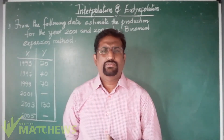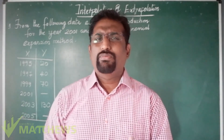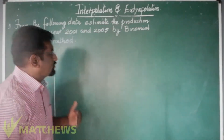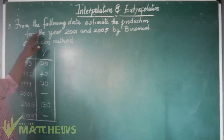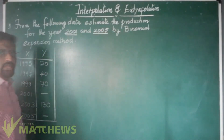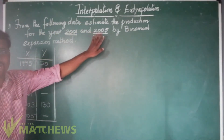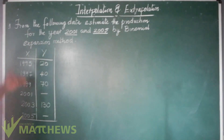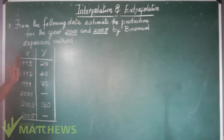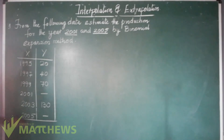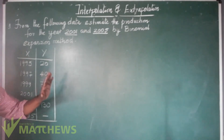I have one problem here to solve on the board. The question goes: from the following data, estimate the production for the year 2001 and 2005 by binomial expansion method. The data given is for years 1995, 97, 99, 2000, 2003, 2005. We can clearly see it follows arithmetic progression with a common difference of 2, and there are no sudden jumps in the values of Y, so the assumptions hold.